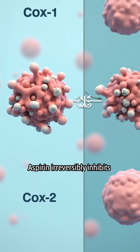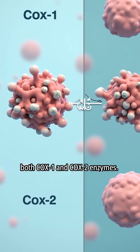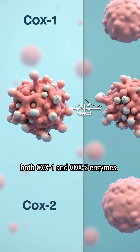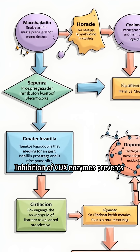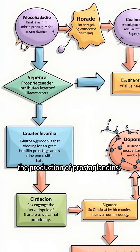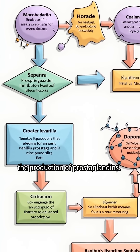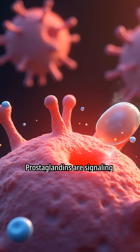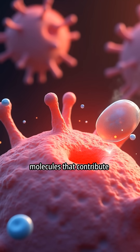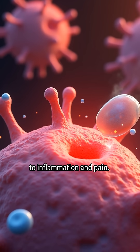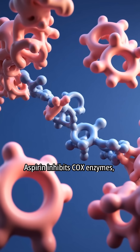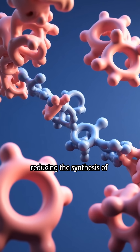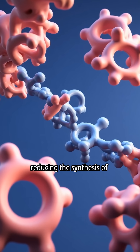Aspirin irreversibly inhibits both COX-1 and COX-2 enzymes. Inhibition of COX enzymes prevents the production of prostaglandins. Prostaglandins are signaling molecules that contribute to inflammation and pain. Aspirin inhibits COX enzymes, reducing the synthesis of prostaglandins.